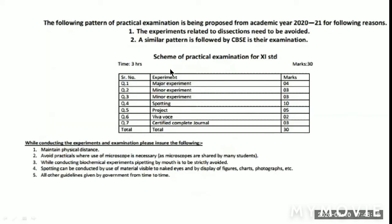This is the syllabus. The practical syllabus carries 30 marks. There are regular patterns with slight changes. Major experiments carry 4 marks, minor experiments carry 3 marks each. In previous levels, 4 marks are for practical major experiments. IVG spotting is 10 marks, Project is 5 marks, VIVA is 2 marks, and certified complete journal is 3 marks — total 30 marks.